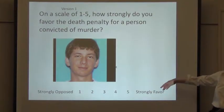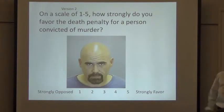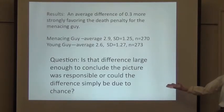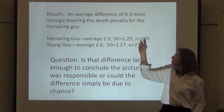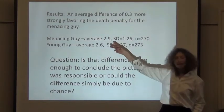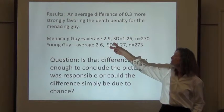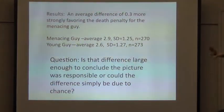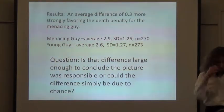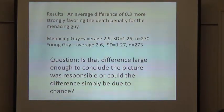And they rate from one who is strongly opposed all the way to five who is strongly favored. Half the people get this, randomly, and the other half get this picture. And so when you look at the results, we got a 0.3 difference. Five hundred and forty-three people took the survey, and we got a difference of 0.3. In the direction we were expecting. People, when they saw him, they did favor it. But the question is, is that 0.3, is that always the question that you're going to encounter in statistics, is that large enough difference that we can distinguish it from chance variation?